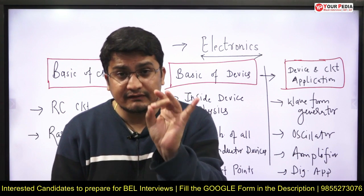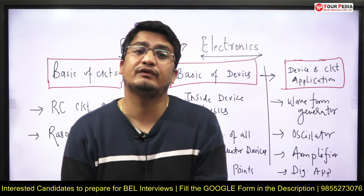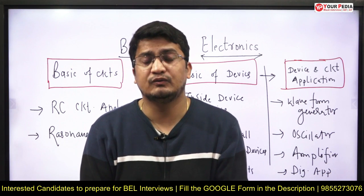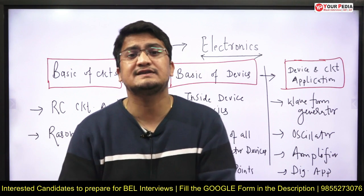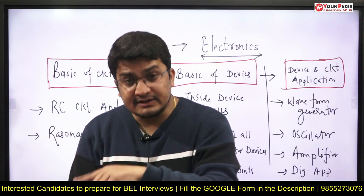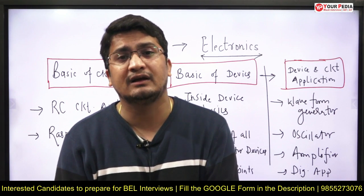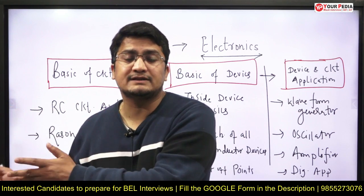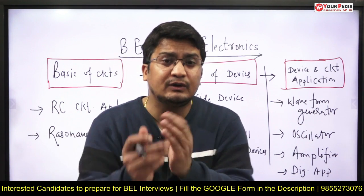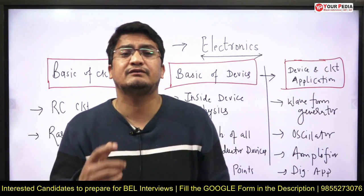If you know how to apply KCL and KVL in the circuit and what these mean, you will be in a position to draw the waveform of any circuit. Many times students know the voltage across the capacitor, but when asked to draw the voltage across the resistor, they get stuck. Apply KVL — at any time, the sum of voltages across the capacitor and resistor in a series circuit must be equal to the applied source. If you know across one element, you can apply KVL to calculate across the other.